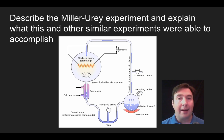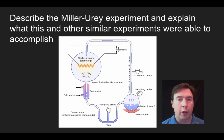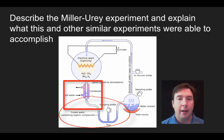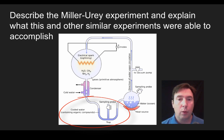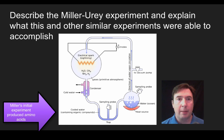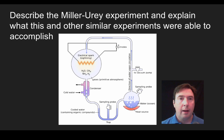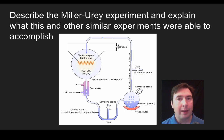He added electrodes to create a spark, simulating lightning, which is also thought to have existed in the early Earth's atmosphere — and there's evidence from other planets that lightning would have occurred. He then condensed that material and collected cooled water at the bottom. In that cool water, we find some organic compounds. So Miller was able to show that by taking non-organic or very simple inorganic molecules under early Earth conditions, we could make some simple organic compounds.